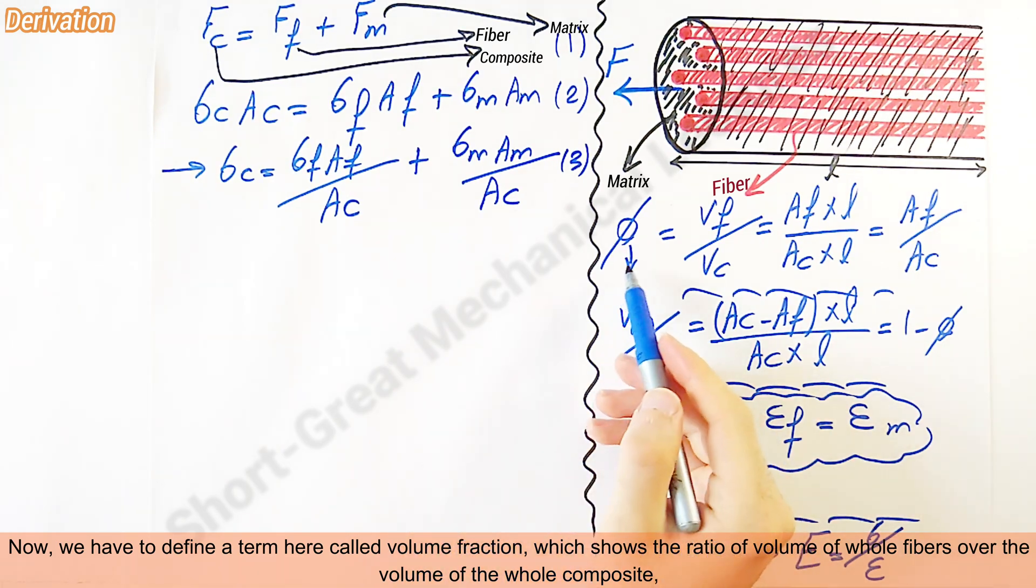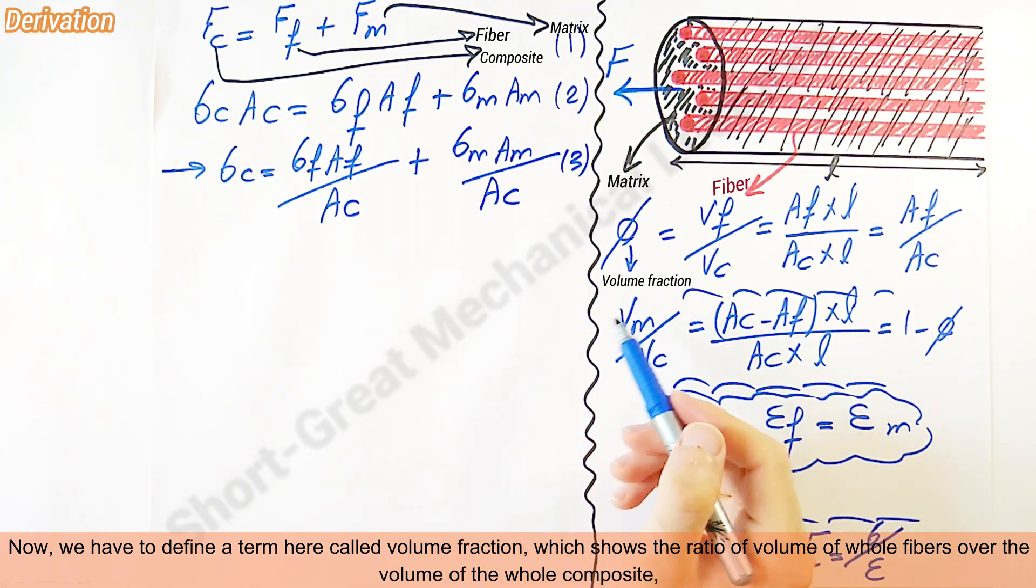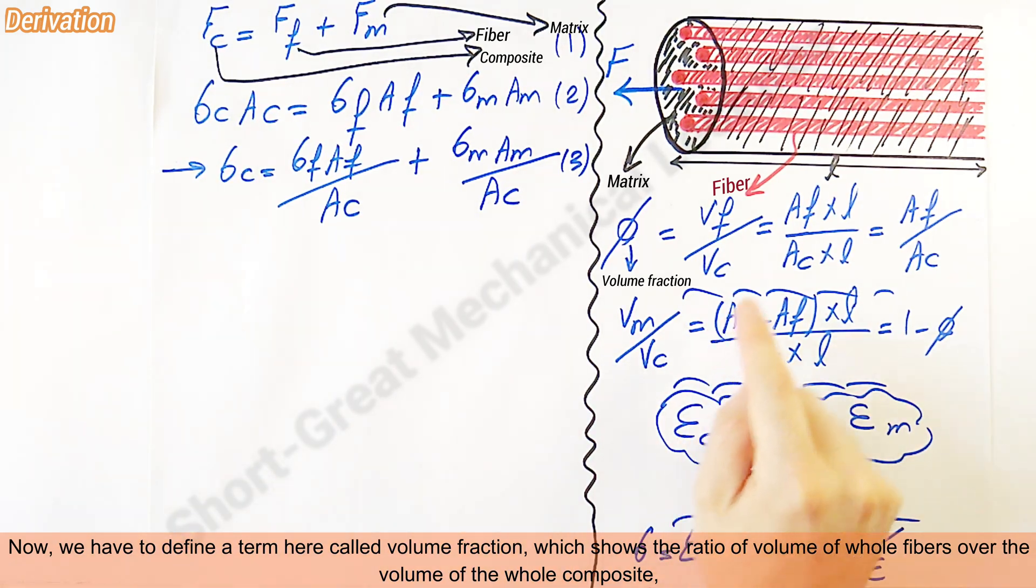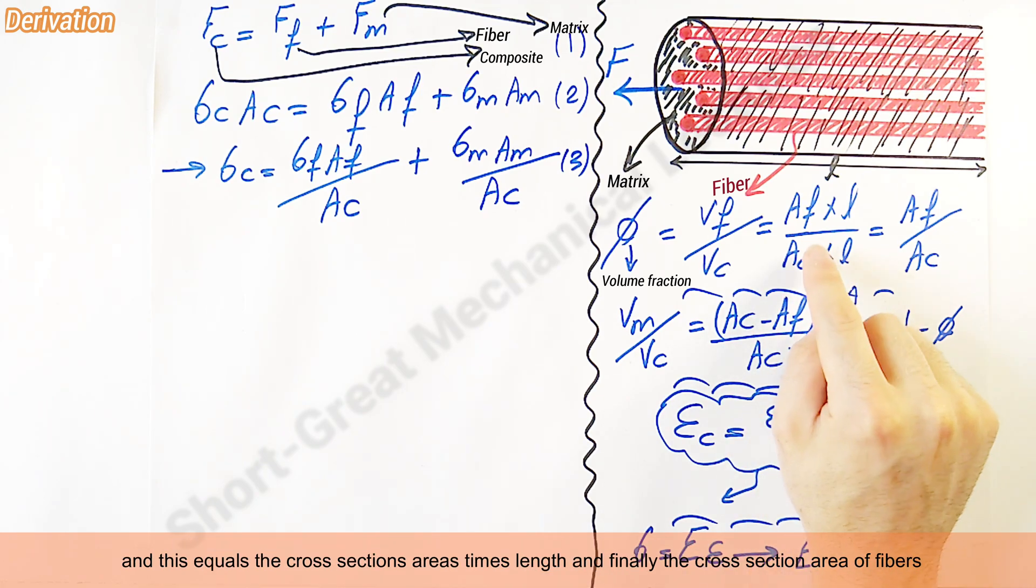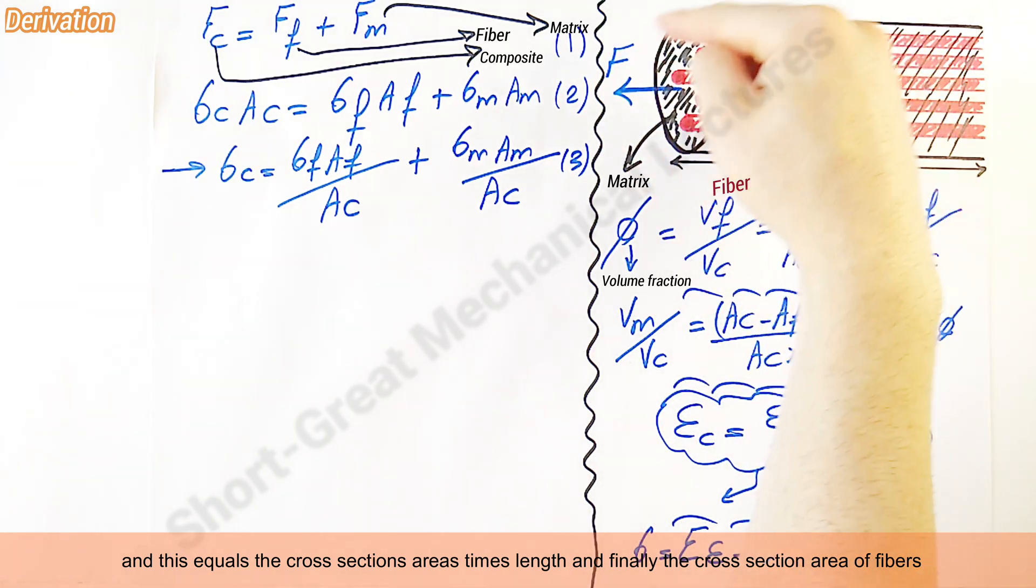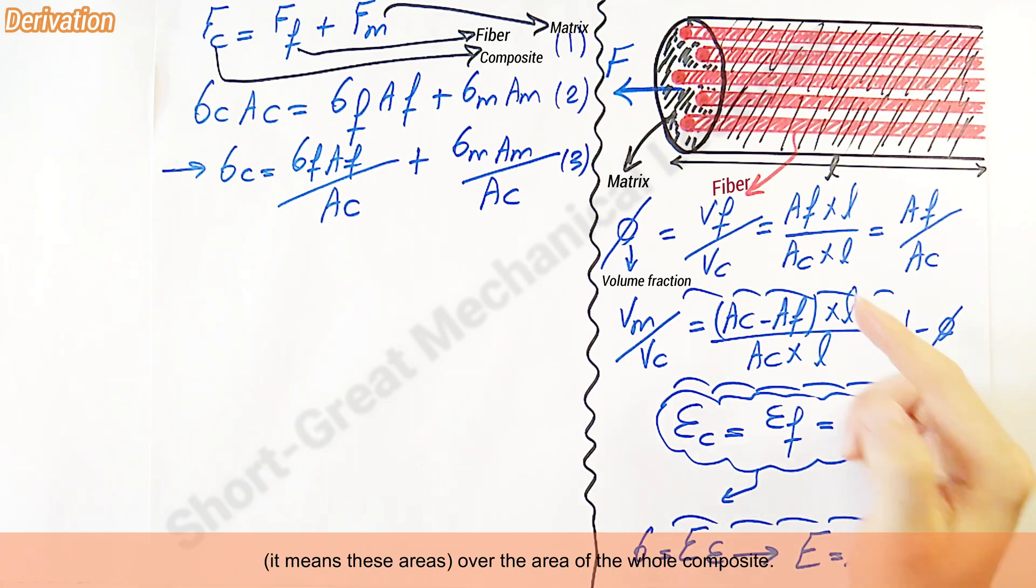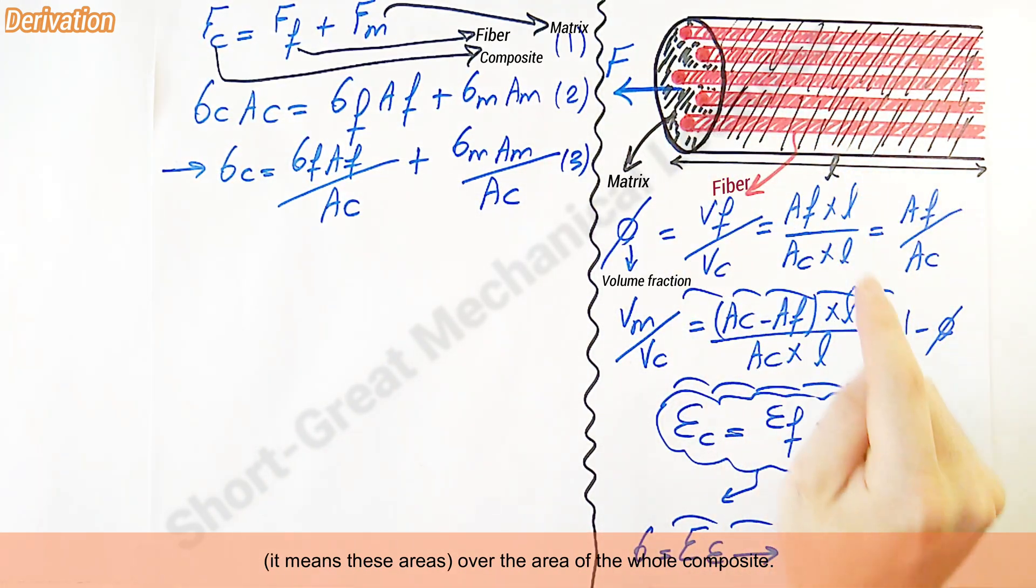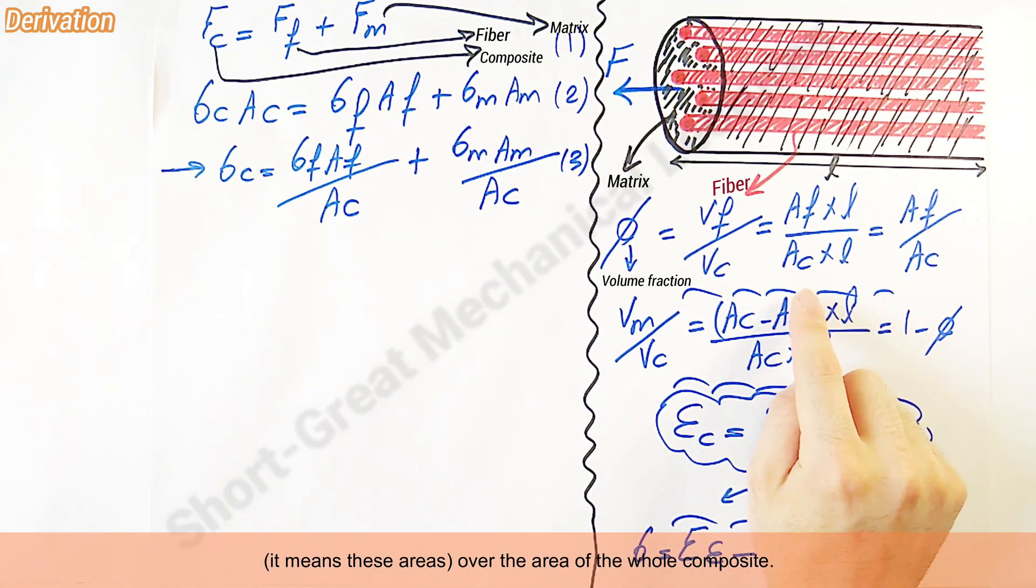Now, we have to define a term here called volume fraction which shows the ratio of volume of whole fibers over the volume of the whole composite. This equals the cross-section areas times lengths and finally the cross-section area of fibers over the area of whole composite.